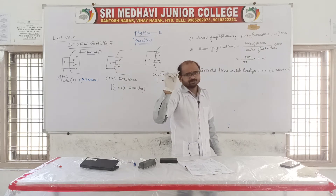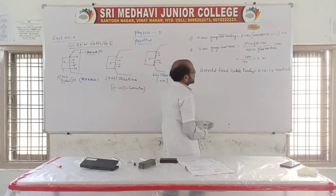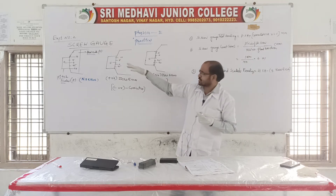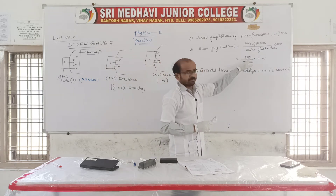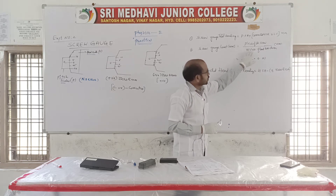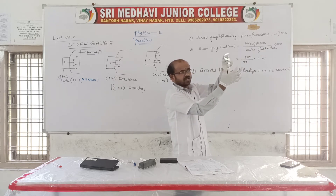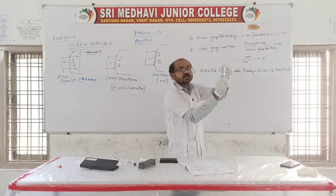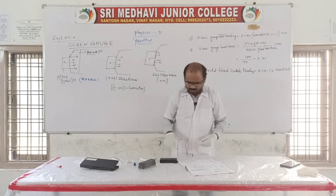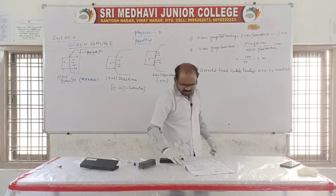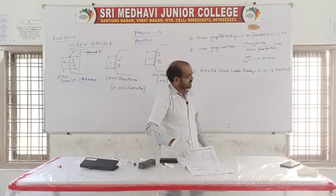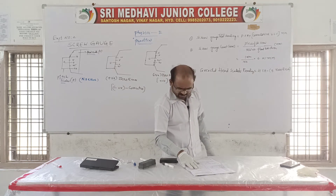The least count of the screw gauge is calculated as: pitch of the screw divided by total number of divisions on the head scale. Each pitch is 1 mm, and there are 100 divisions on the head scale. So least count = 1 mm / 100 = 0.01 mm, which we can also write as 0.001 cm. This gives more accuracy than the vernier caliper.